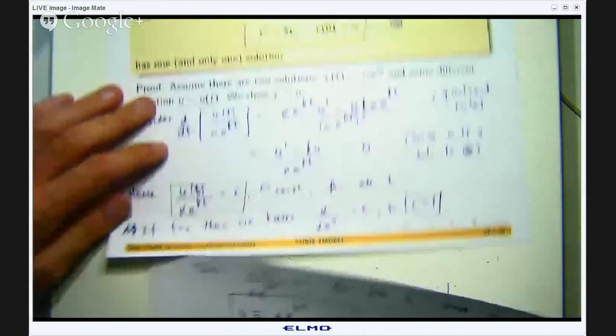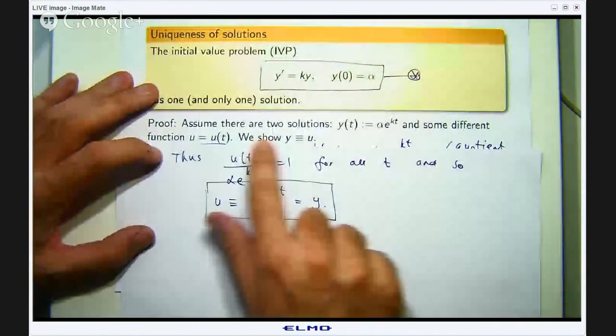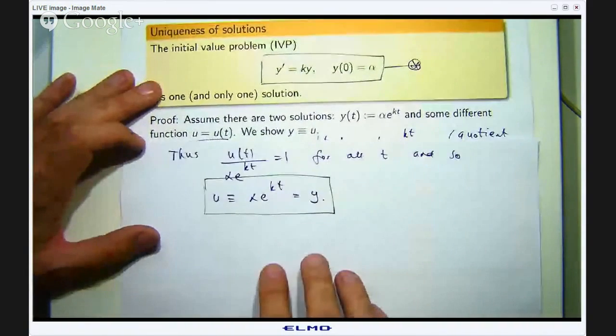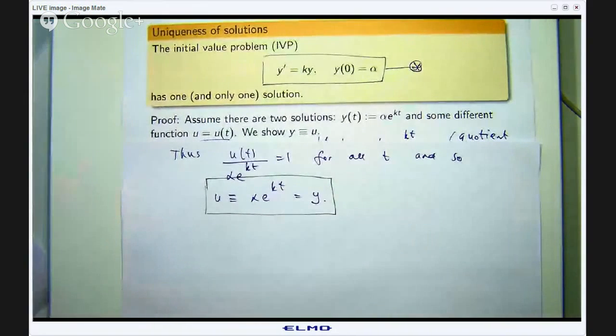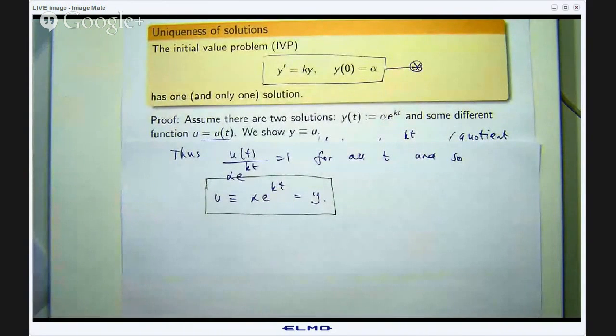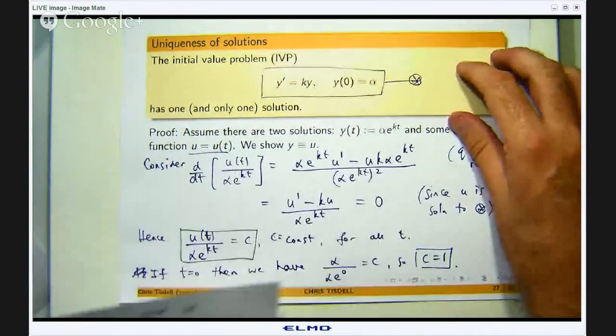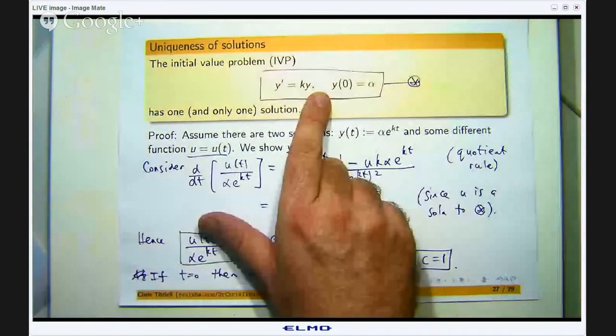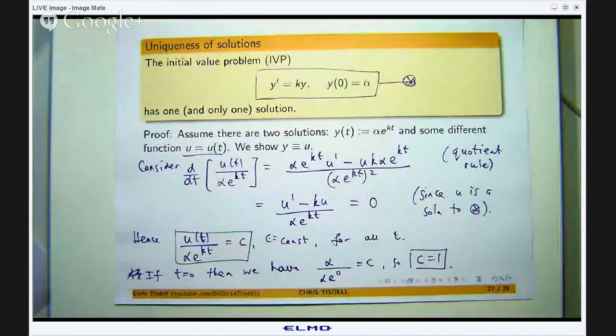So we have now shown what we wanted to show. We have assumed there were two solutions. We have shown that actually the two solutions must be one and the same solution. So that is it. That is why the initial value problem here has one and only one solution.